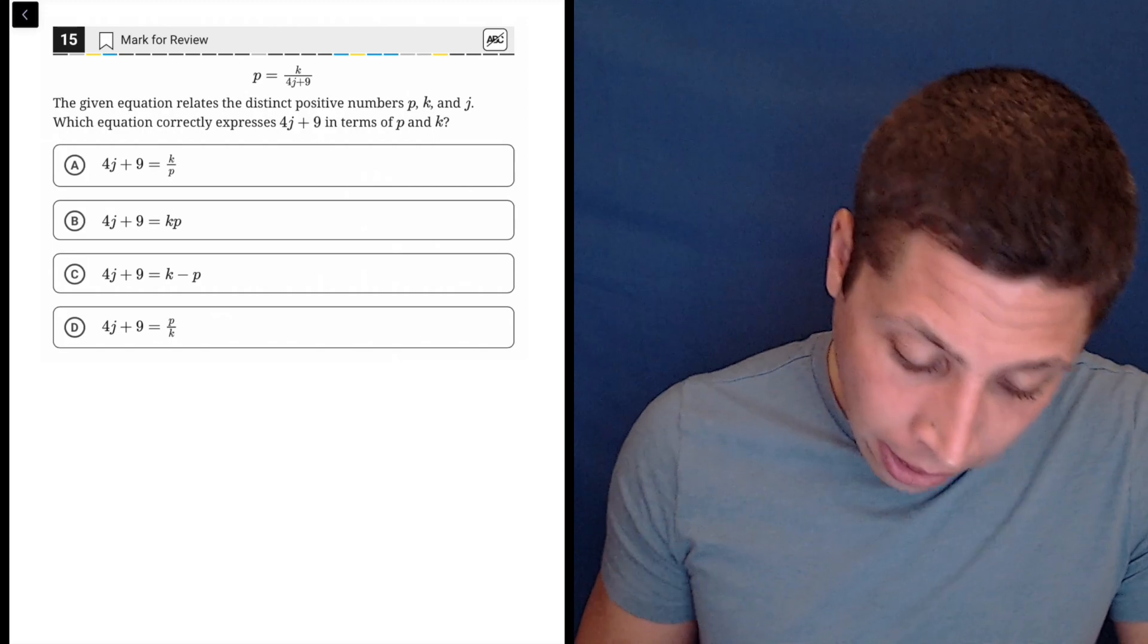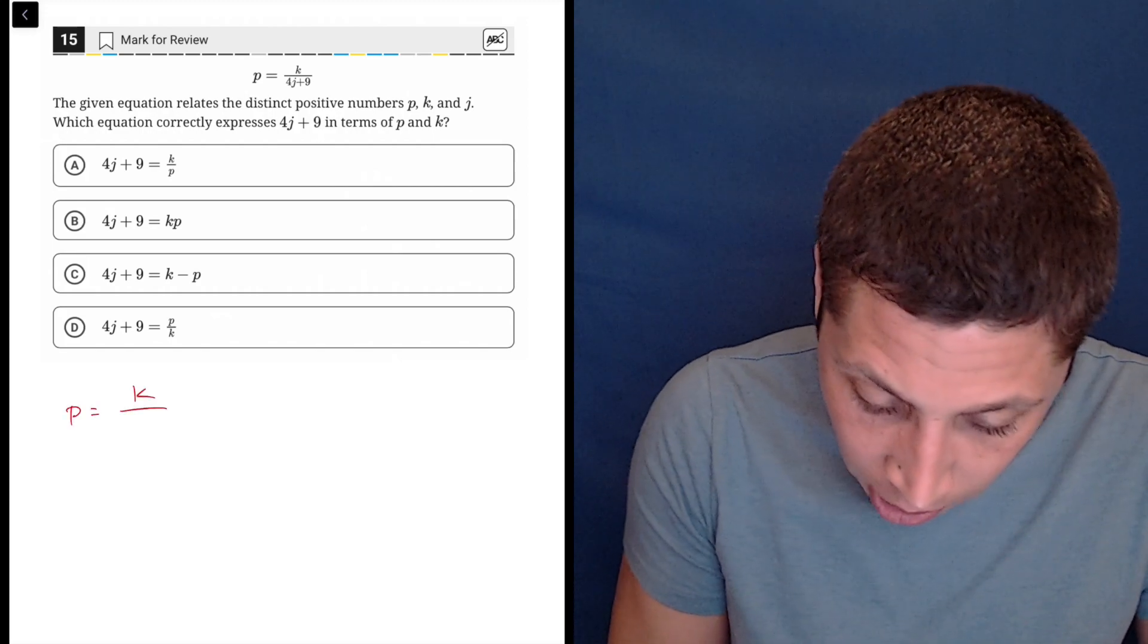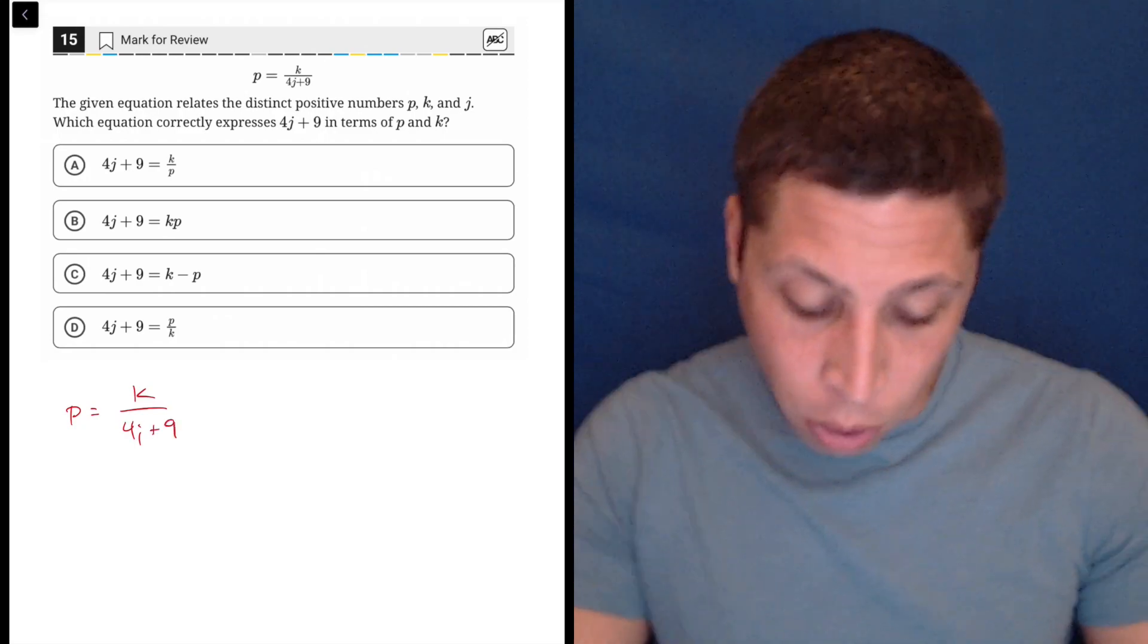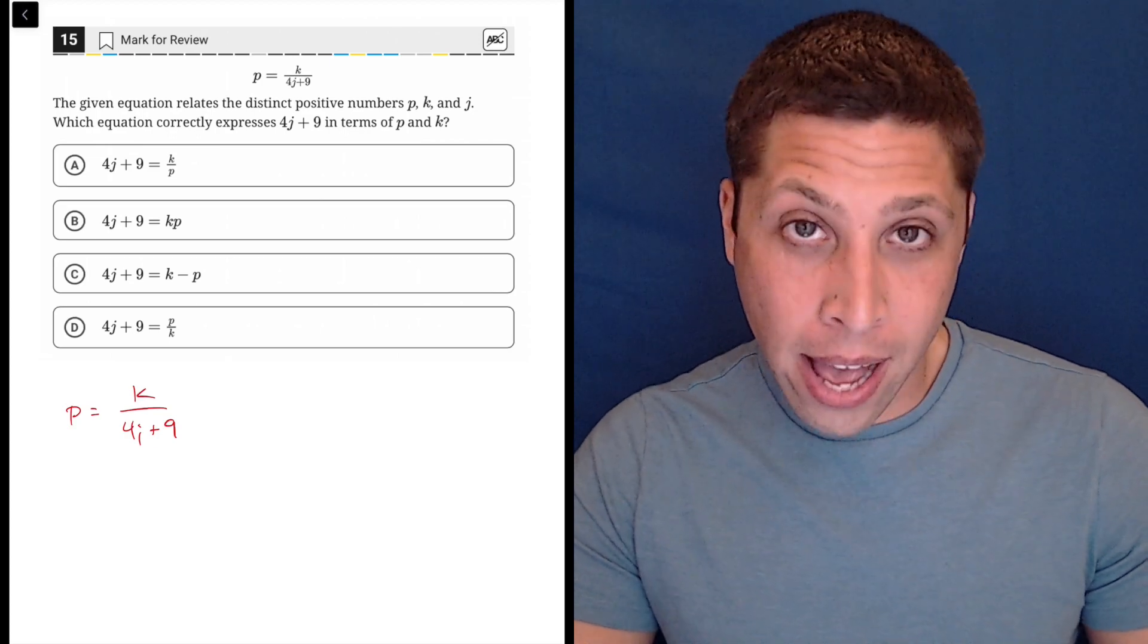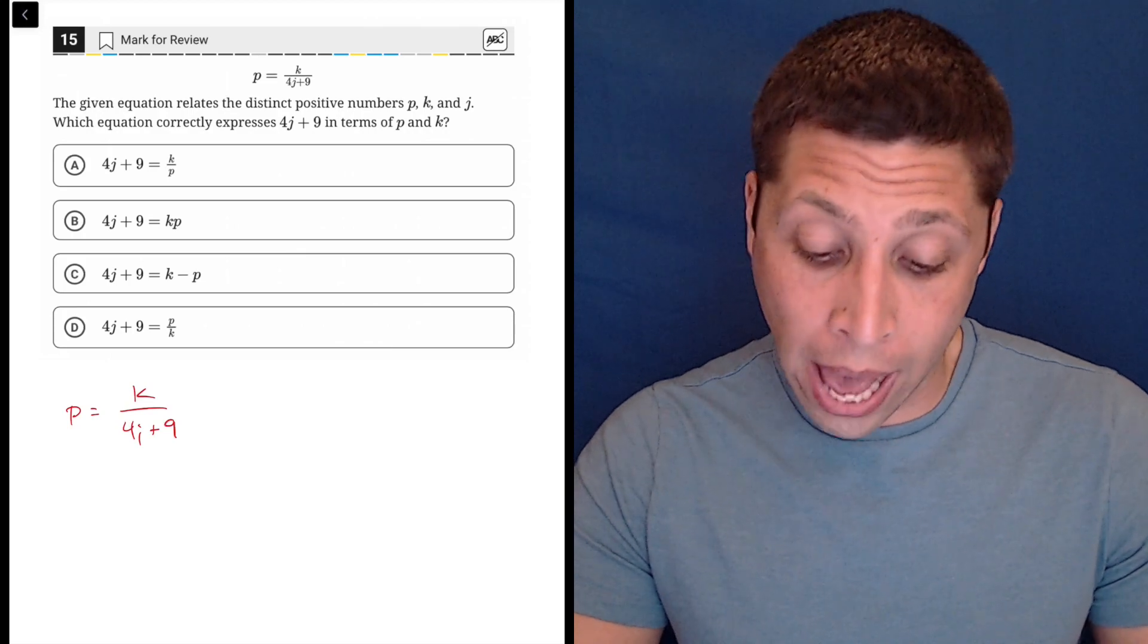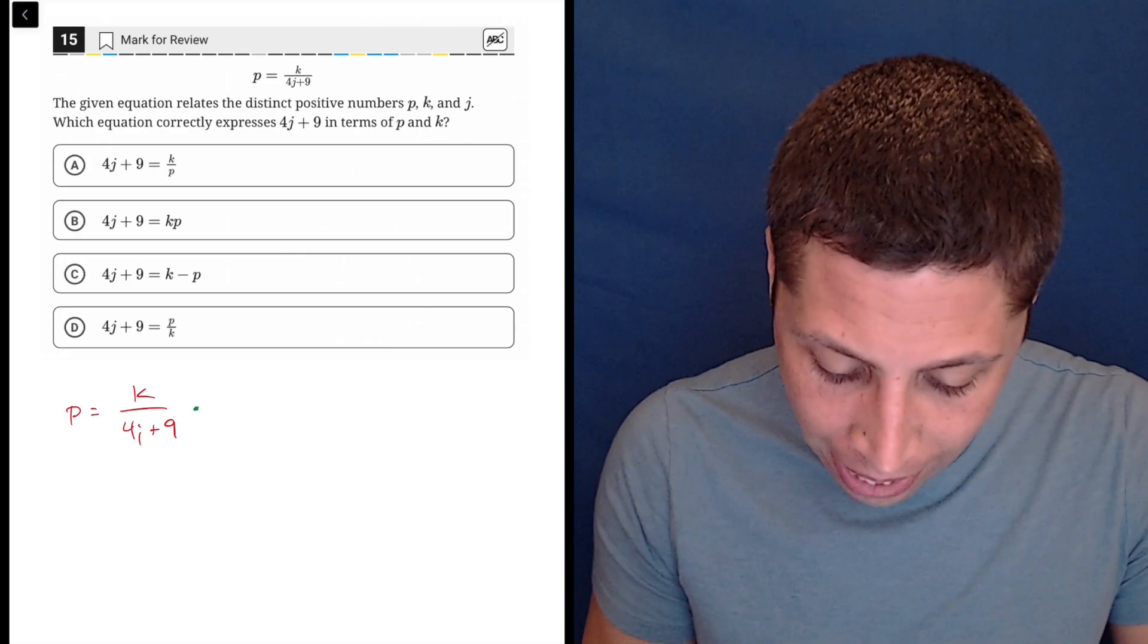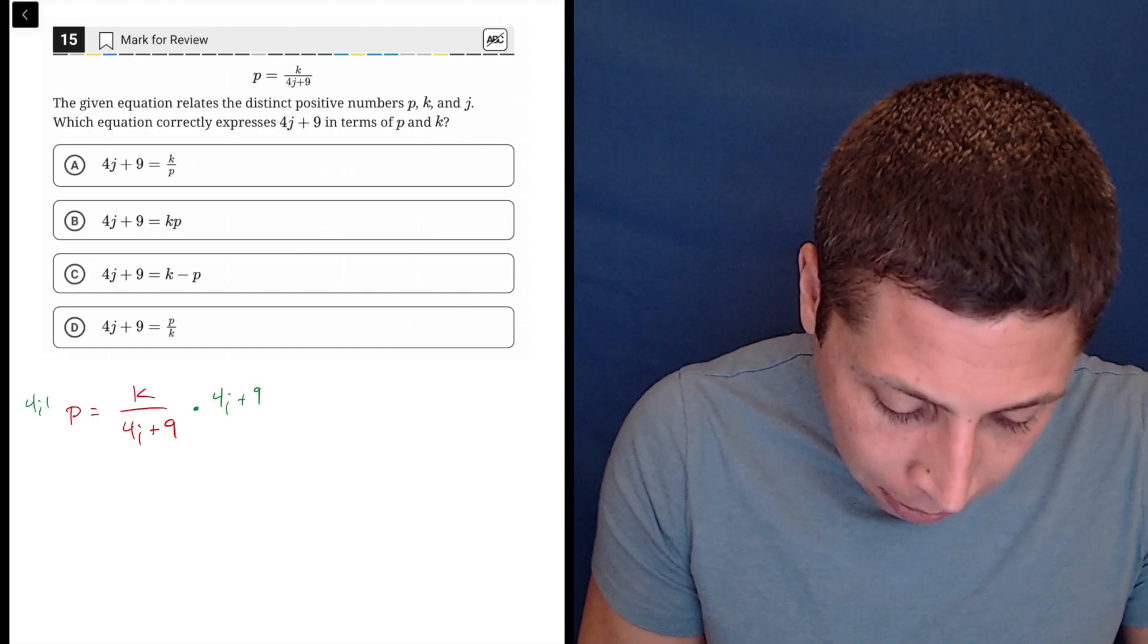Let me just show you what that will look like. So I'm going to rewrite the whole thing, so p is equal to k over 4j plus 9. We can kind of see that we've gotten that 4j plus 9 out of the fraction, so we should do that to start. We should move it out of the fraction, and the way to get rid of a fraction is through multiplication. So we're going to multiply both sides by 4j plus 9.